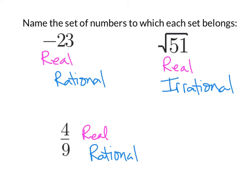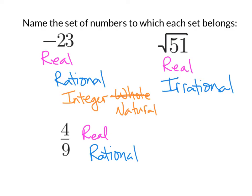After splitting into rational or irrational, we check whether it's an integer. Integers are the whole number types. Since 4/9 is a fraction, we stop there. Negative 23, because it's negative, makes it an integer. Continuing down to whole number or natural number — since negative 23 is negative, it can't be a whole number or natural number. So its three classifications are: real, rational, and integer. The other two numbers only have two classifications each.